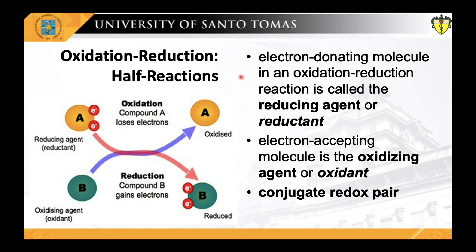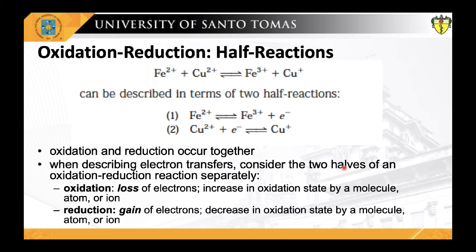As a review, remember that the electron-donating molecule in an oxidation-reduction reaction is called the reducing agent or reductant. The electron-accepting molecule is the oxidizing agent or oxidant. A given agent — such as an iron cation existing in the ferrous (iron²⁺) or ferric (iron³⁺) states — functions as a conjugate reductant-oxidant pair, similar to how a conjugate acid-base pair functions.